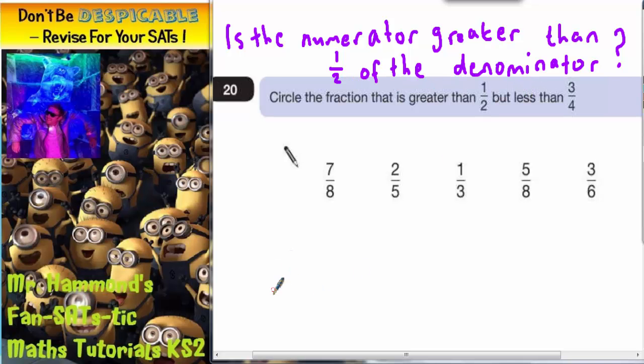For example, if I'm talking about eighths, then half of eight is four. So four eighths is a half. So anything bigger than four eighths is going to be bigger than a half.